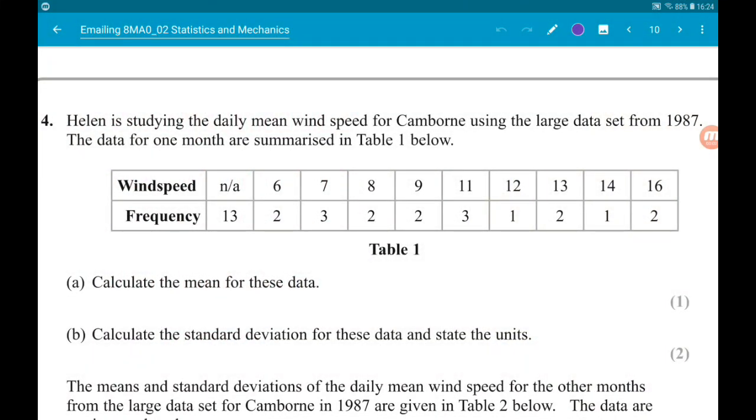Okay, question four. We have the large data set, yay! So I'll try and remember to put a link to it down below. If I forget, you can find it on the Edexcel website. So Helen is studying the daily mean wind speed for Camborne using the large data set from 1987. How exciting!